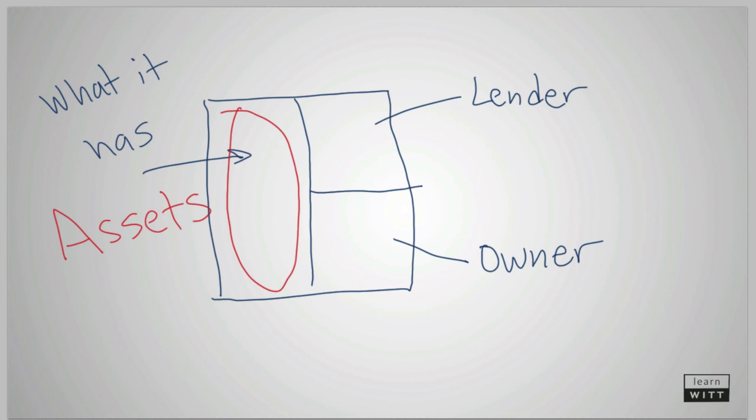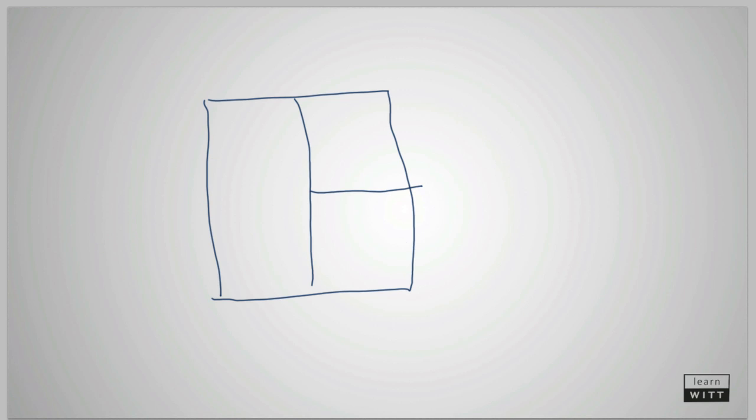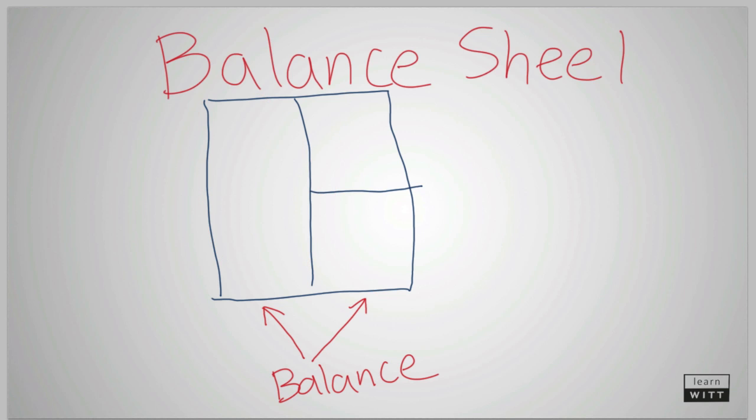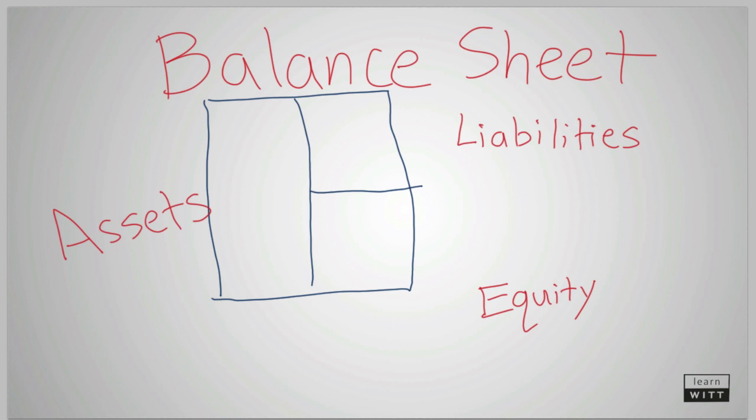On the right side of the box, there are two categories that represent where all of the company's assets came from. The term used for the lender category is liabilities. The term used for the owner category is equity. It was also discussed how this box will always balance. In accounting, this box is called a balance sheet.